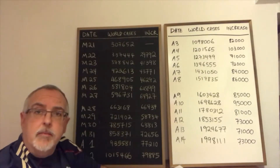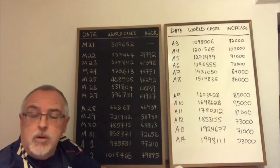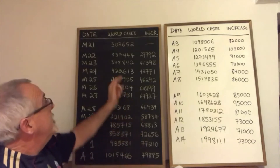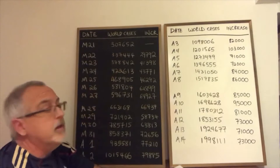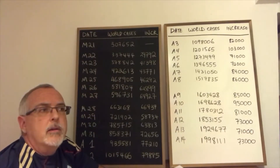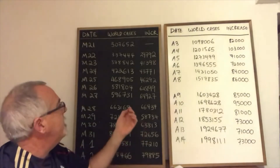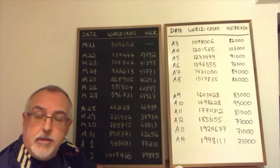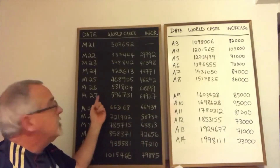I found a website called worldometers.info which is keeping track of the number of confirmed cases for the world, also broken down by countries. That night at 10 p.m. the number of cases reported there was 307,652. I figured out that the number of cases should go up to about 615,000 after six days if this scientist was right, and that would be on March 27th.